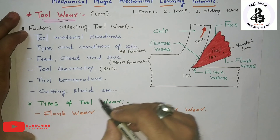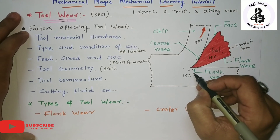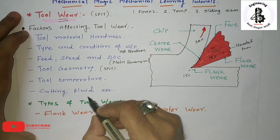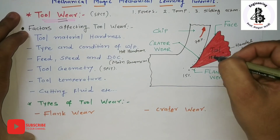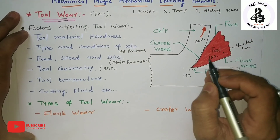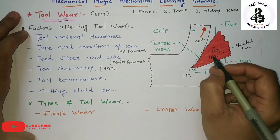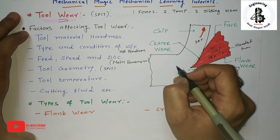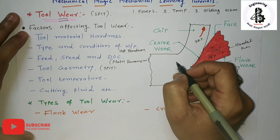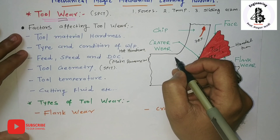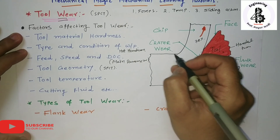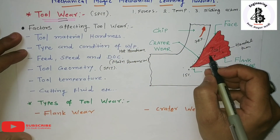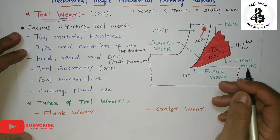The most important factor is cutting fluids. Whenever cutting hard materials, by using cutting fluid during cutting operations you can increase the life of the tool and reduce tool wear during machining operations. Now we will discuss the different kinds of wear that take place in the single point cutting tool.